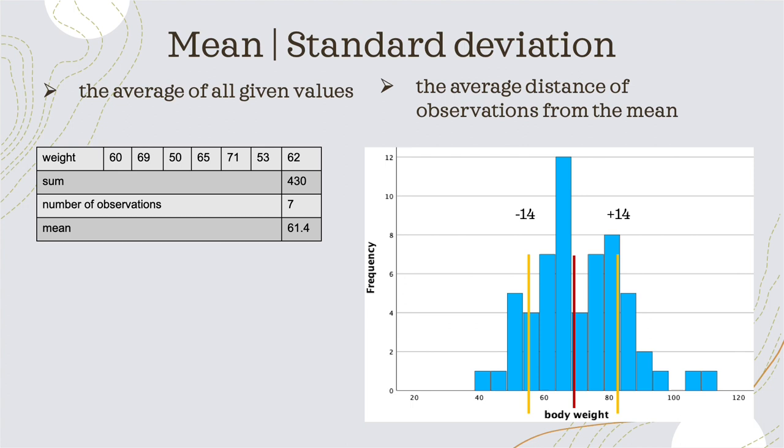To calculate the mean, we sum all measures up and divide by the number of observations. Moving to the standard deviation: it is the average distance of observations from the sample mean — a standardized value.